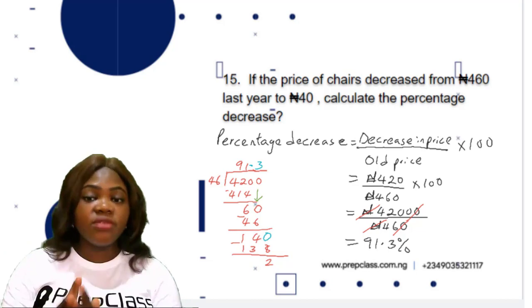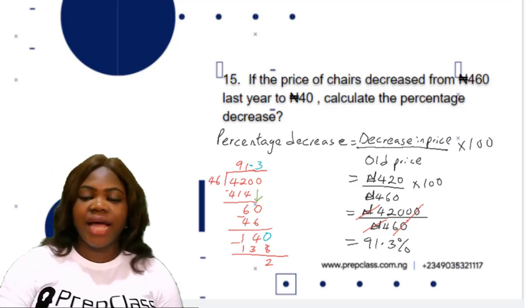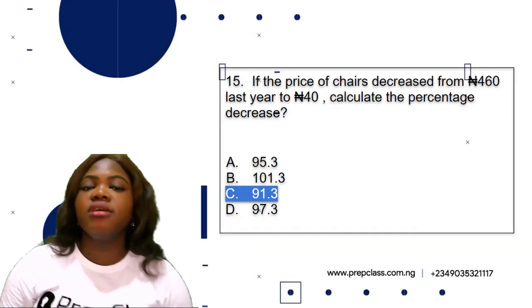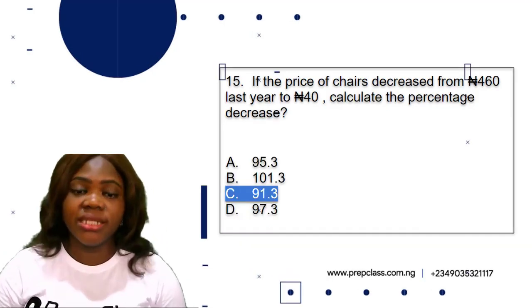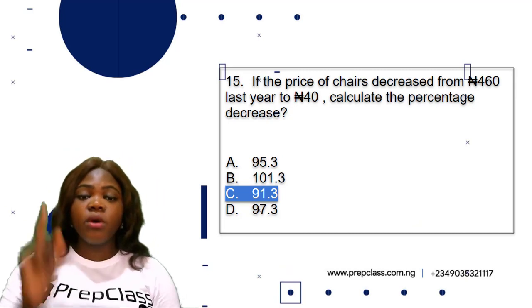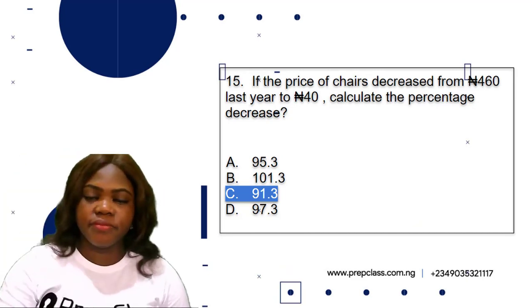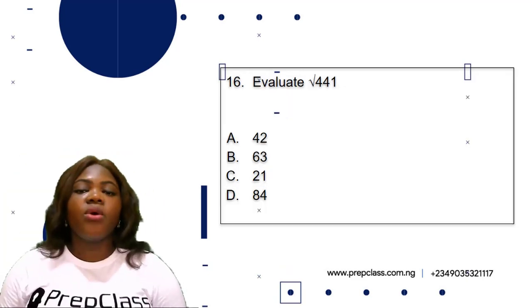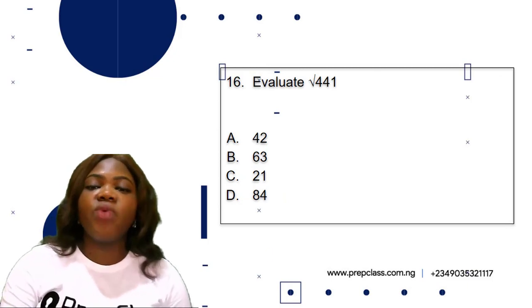So the percentage decrease is 91.3%. The correct option is option C: 91.3. Now for question 16: evaluate the square root of 441.